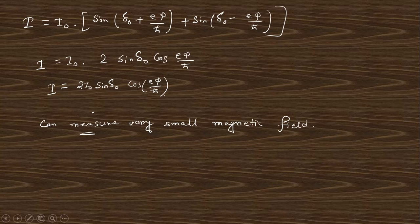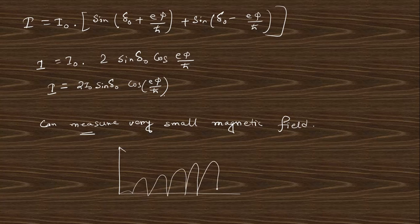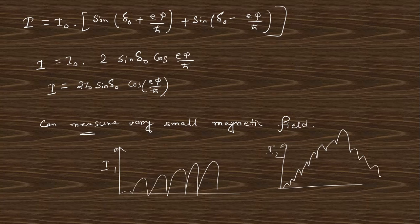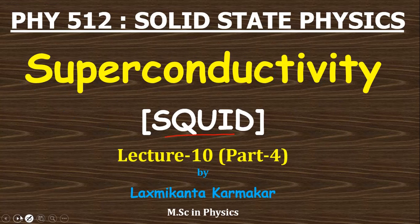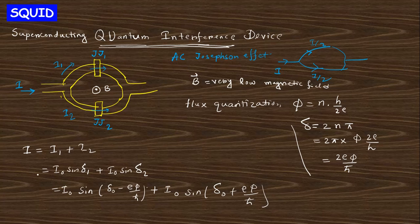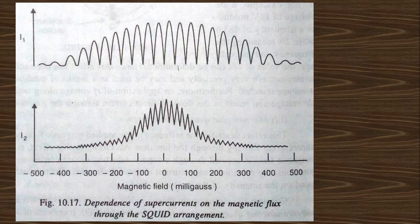If you plot the current I1 and I2 versus magnetic field, they form a diffraction pattern — I1 like this and I2 like that. This is a diffraction pattern, and that is why this is called quantum interference. This is used in various different instrumental applications. The images show the two currents I1 and I2 with respect to magnetic field — very low magnetic field — and these two currents are different. Thank you.